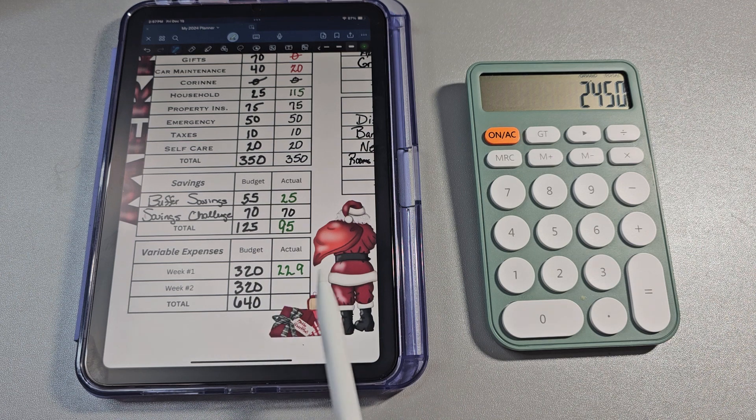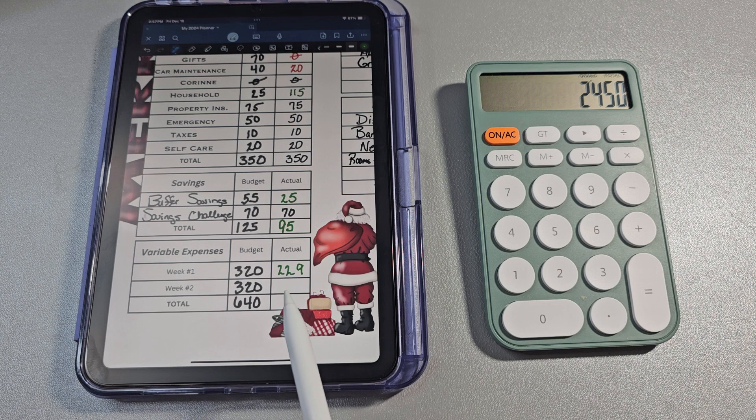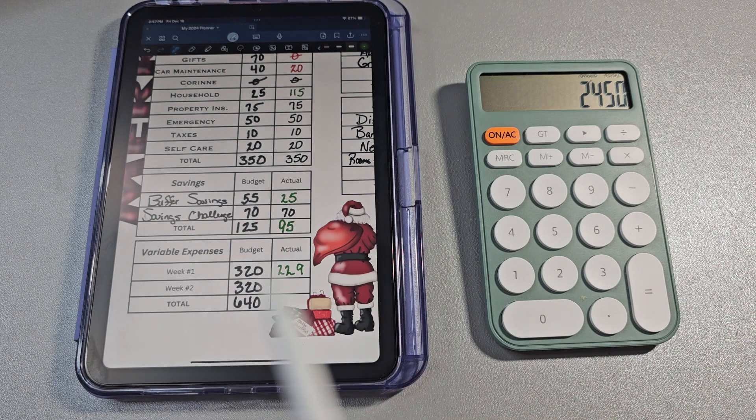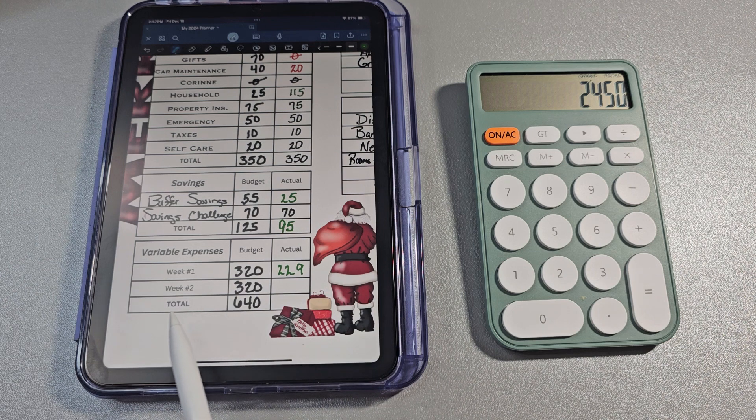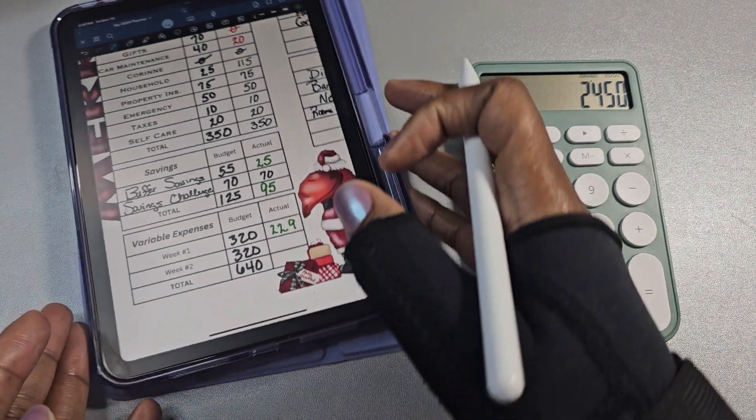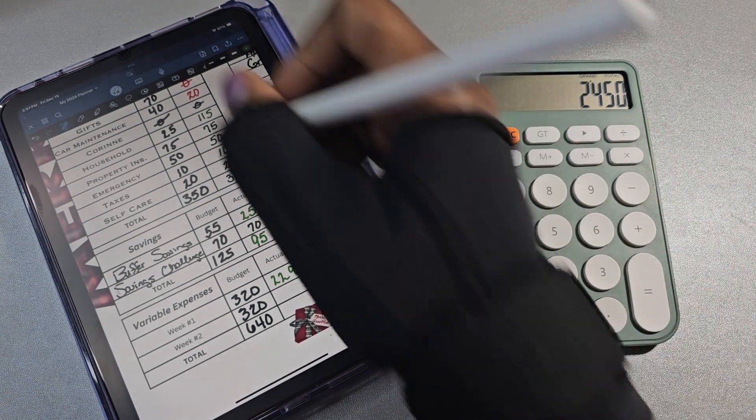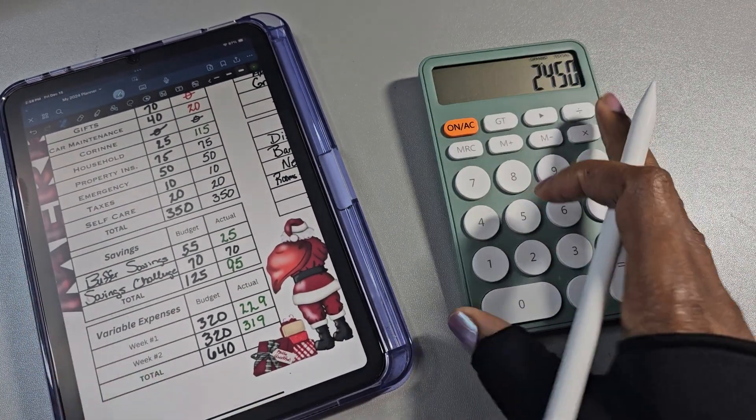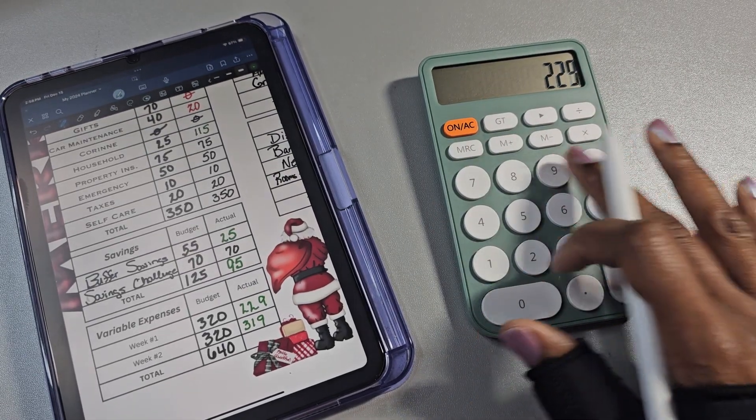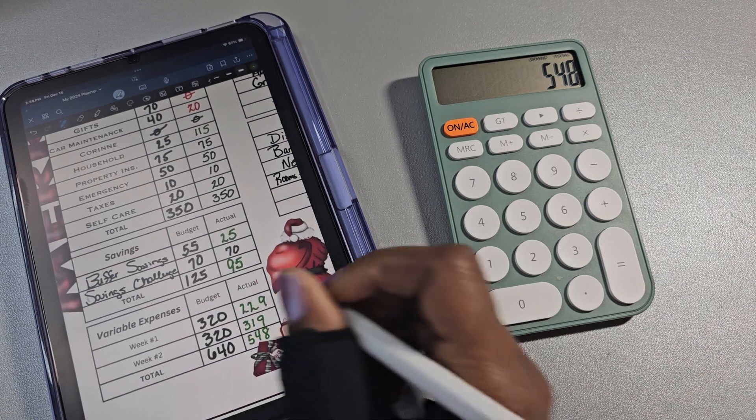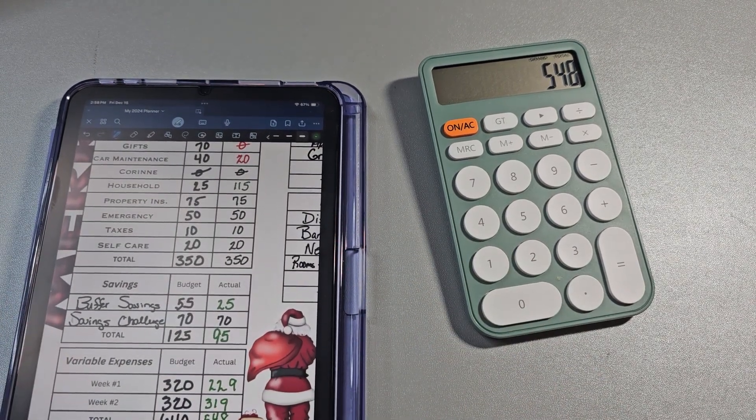Next with variable expenses, my weekly budget check-in, I do a two-week time period on that. That is one of the videos that I did as far as this batch recording is concerned. But week one I came in at $229, which was definitely under budget. And then week two that just wrapped up on yesterday, Thursday, I still came in under budget, but only by a dollar. So that's $319 on that one. I came in at $548 total, although I budgeted $640.